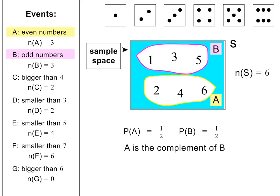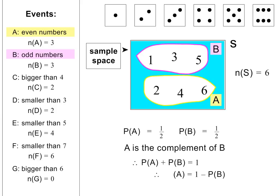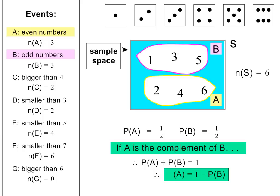When this is the case, we say that A is the complement of B. When events are complementary, the sum of their probabilities will always be equal to 1. In this case, we have 1 half plus 1 half, which is definitely equal to 1. We can therefore state that the probability of A equals 1 minus the probability of B. This is another important formula to remember if A and B are complementary events. The event B is also sometimes called 'not A', because an odd number is a number that is not even. Please pause the lesson if you need more time here.